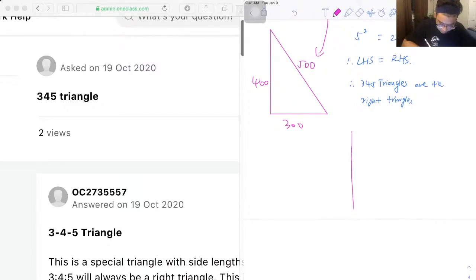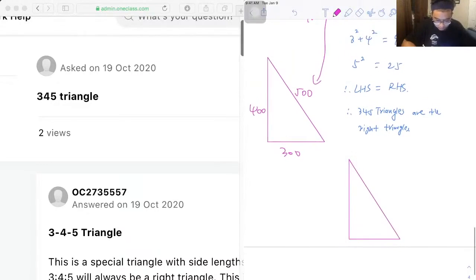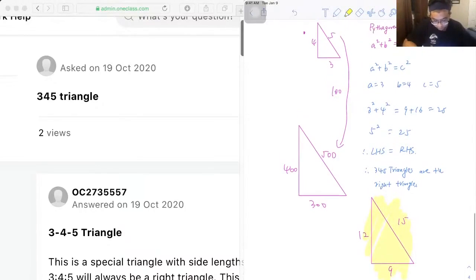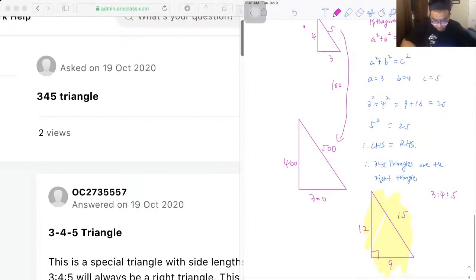And also, another example can be—let's say, that's 15, and that's 9, and that's 12, right. So in this triangle, we know that the hypotenuse 5 becomes 15, which is times 3, and the long leg 4 becomes 12, which is still times 3, and 3 becomes 9, which is still times 3. So it still follows a pattern of 3, 4, and 5. So this is still going to be a right triangle.